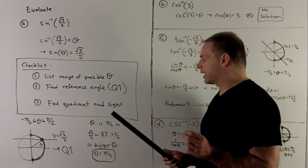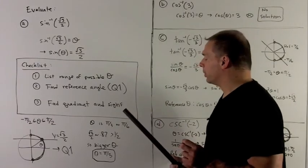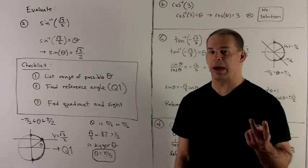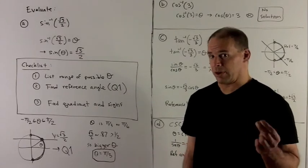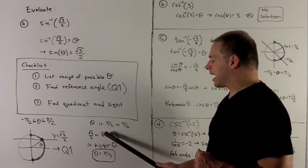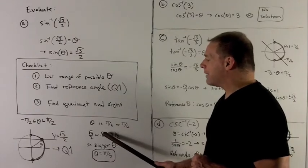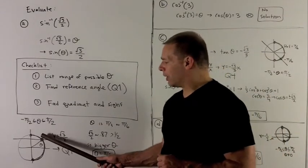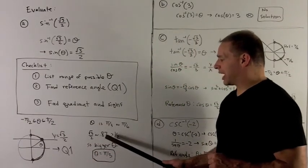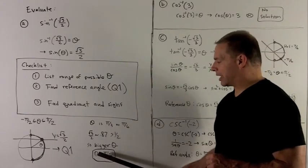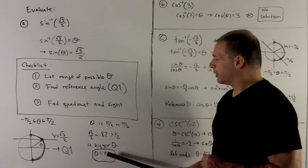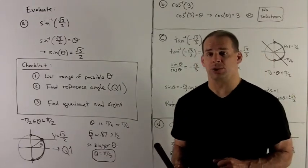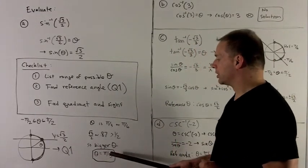We need to ask: what is radical 3 over 2? Well, that's roughly 0.87. We know radical 3 over 2 is either going to go with pi 6 or pi thirds — just have to figure out which one. Now 0.87 is bigger than a half, so the y value of my angle is going to be the bigger of pi thirds or pi 6, because a bigger angle will have a bigger y value. So that means I have to go with pi thirds. My answer is theta equals pi thirds, because if I'm in the first quadrant, the signs are going to be positive no matter what trig function I use. So the answer is pi thirds.